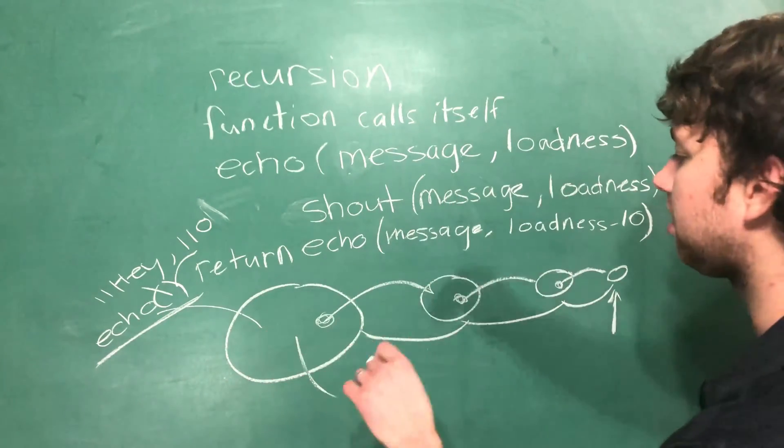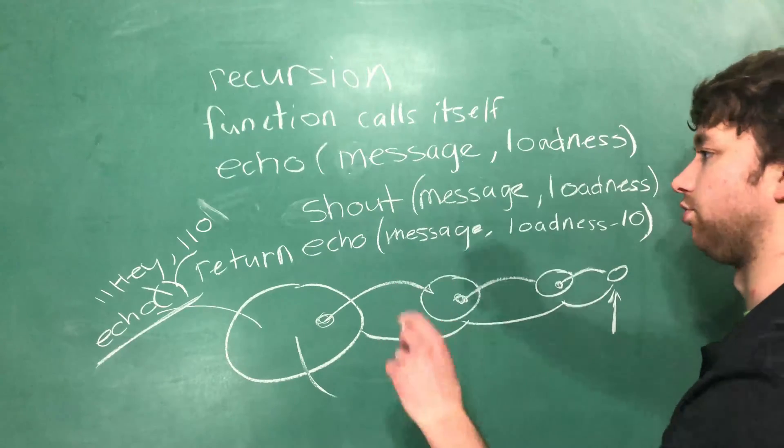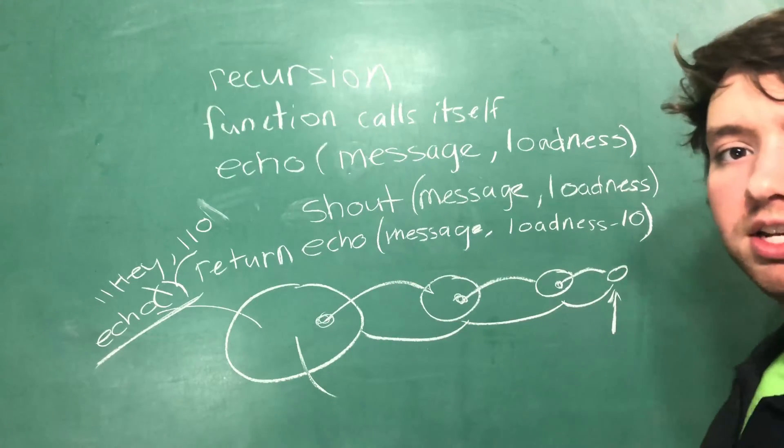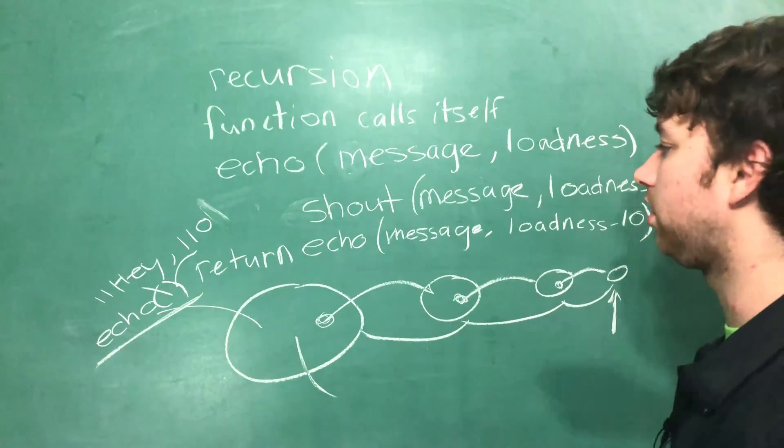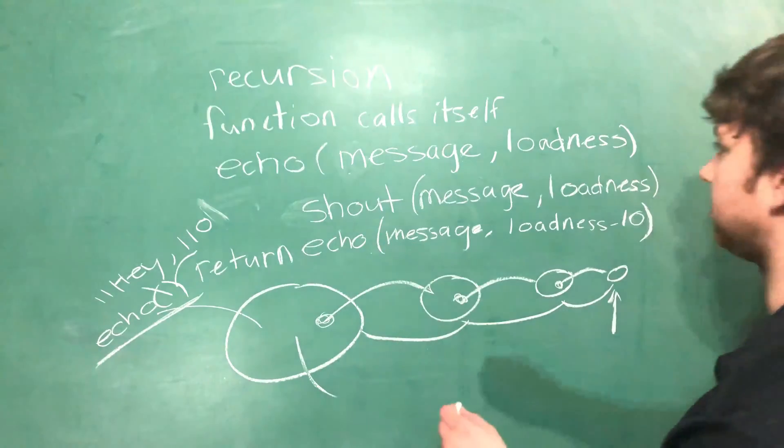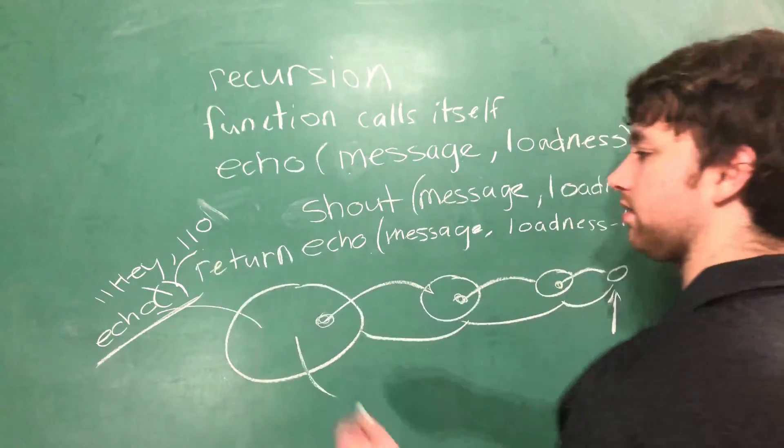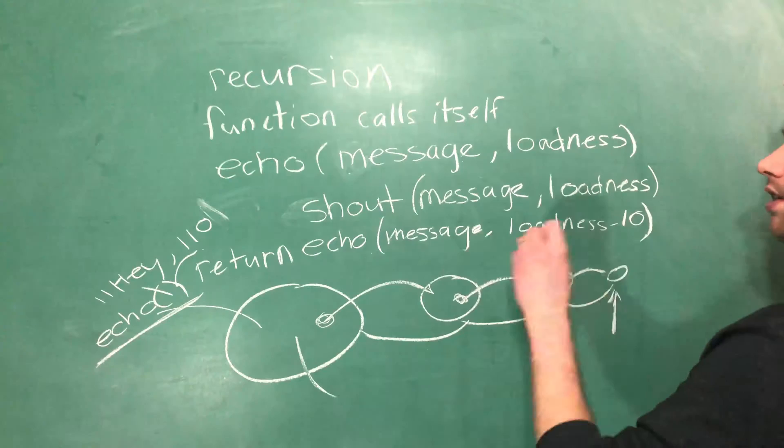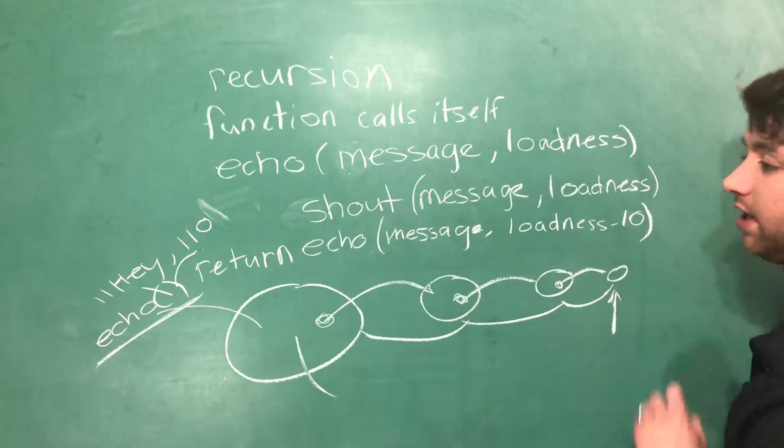Okay, enough about the returns. Let's talk about actually ending this recursion. In this situation, it's an infinite recursion because we're going to call echo, pass in, originally we had 110, so we're going to pass in 100. That's going to shout the message at 100 decibels.